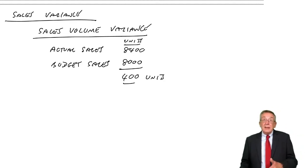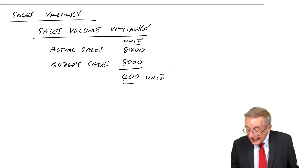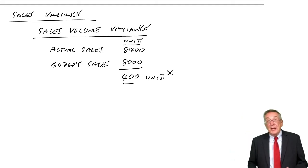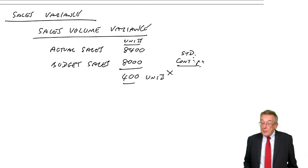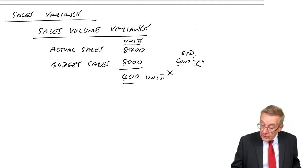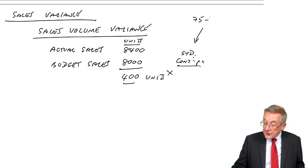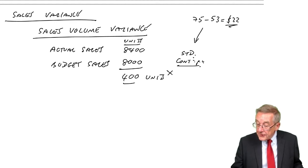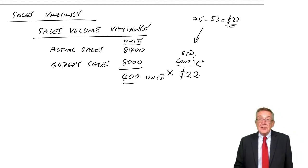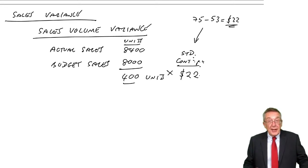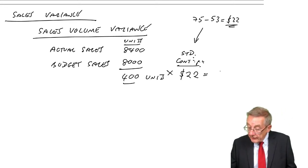And so here, we sold 400 more units than we budgeted. Now, if everything else had gone perfectly, how much extra profit would that have given us? Now, remember, we're doing marginal costing. And so selling 400 extra units should have, the extra profit will be the standard contribution per unit. And if everything else had gone perfectly, each unit should have sold for $75. Each unit had a standard cost of $53. Every unit should have given us $22. And so selling 400 extra units, that, again, if everything else had gone perfectly, that would have given us an extra 8,800 profit.